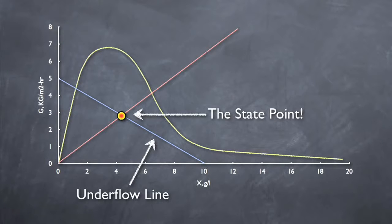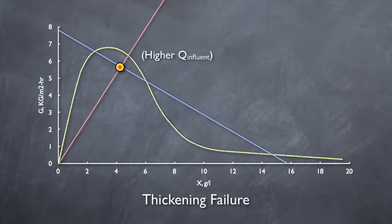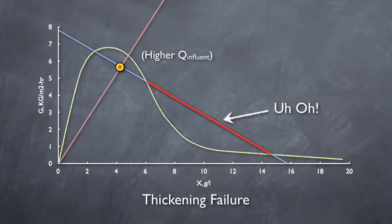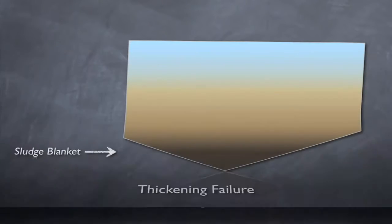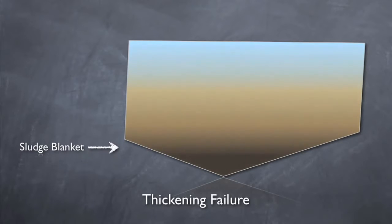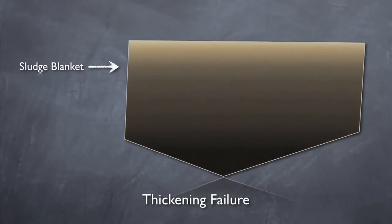If the state point is under the curve, but the entire underflow rate line isn't, the clarifier is failing in thickening. This means that sludge is settling in the clarifier, but isn't being removed fast enough. Under these conditions, the sludge blanket would rise in the clarifier until solids are passing over the weir.